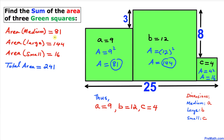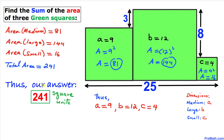So the total green area turns out to be 81 plus 144 plus 16, which equals 241 square units. That's our answer: 241 square units. Thanks for watching, and please don't forget to subscribe to my channel for more exciting videos. Bye!